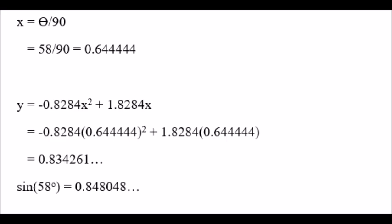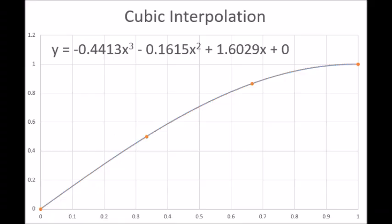When we crunch the numbers, it turns out that quadratic interpolation yields an answer much closer to sine 58 degrees than linear interpolation did. Specifically, 0.834261 is much closer to the true value of 0.848048.